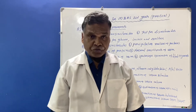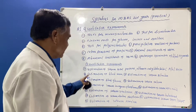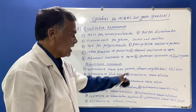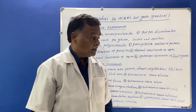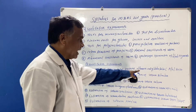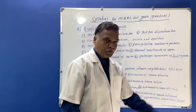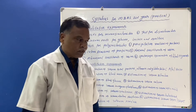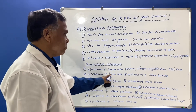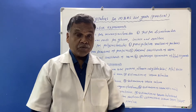The second part is known as quantitative experiments. Here the student has to estimate a precise amount of a given parameter. This includes the estimation of serum total protein, albumin, globulin, and the A/G ratio. Then estimation of blood urea — you need to find out the amount of urea present in the human blood or serum sample.